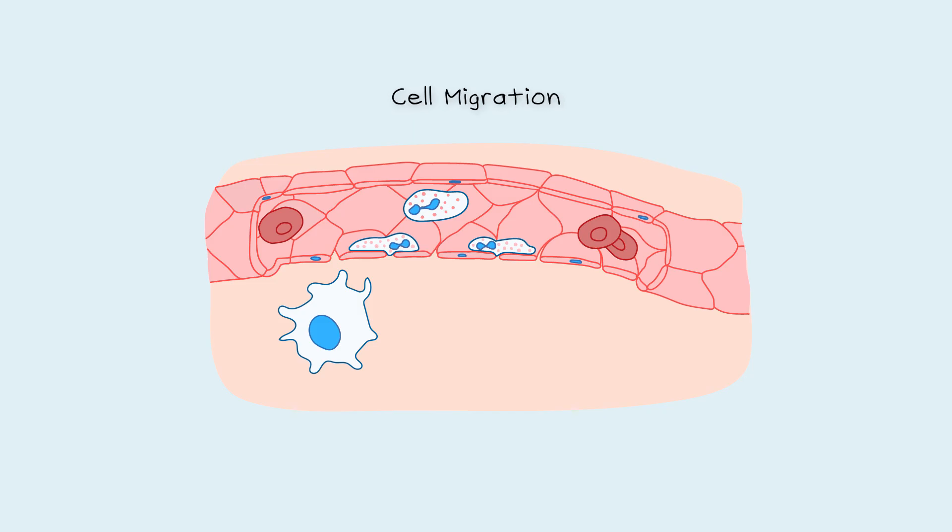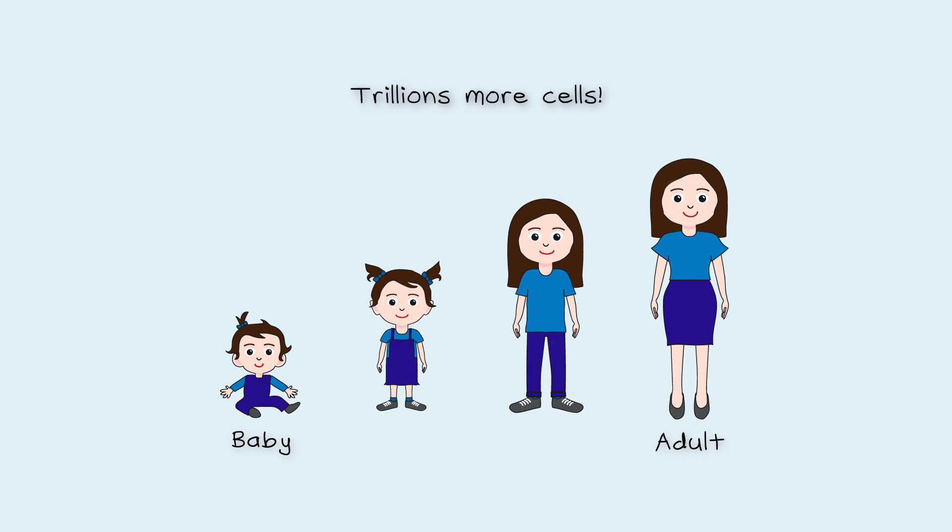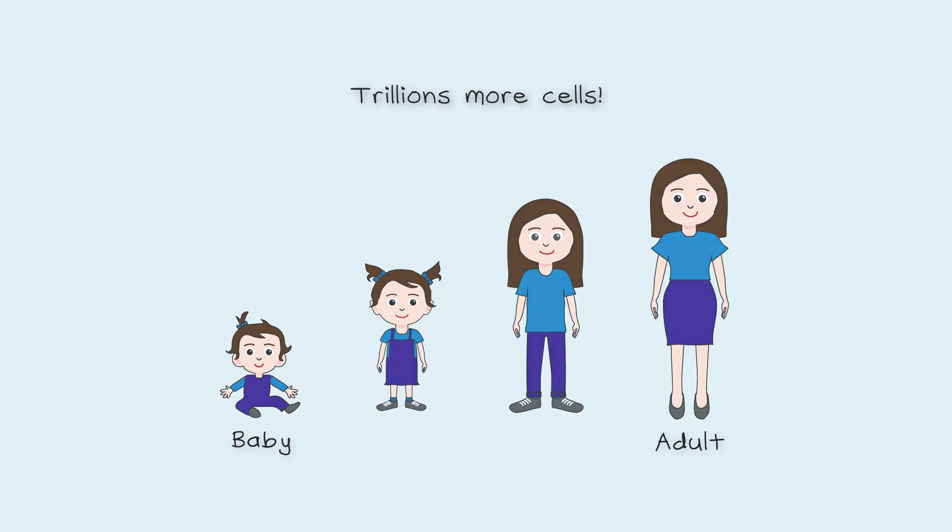Cell migration allows the body to get rid of infections and cell death is necessary to get the tissues back to normal. The last cellular function to explore is called cell division. We can't grow from a baby into an adult without making more cells. There are trillions more cells in an adult than in a baby. So cells also need to make copies of themselves for your body to grow.